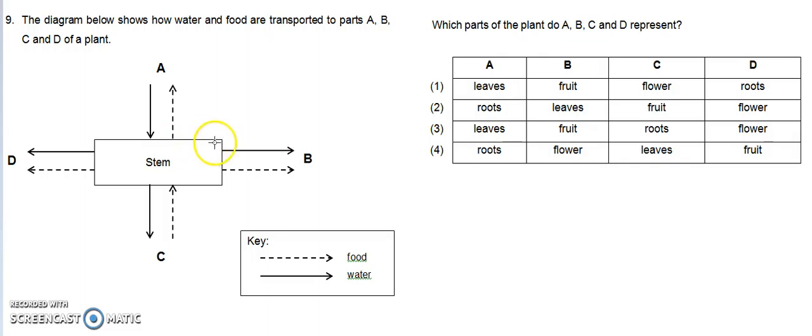In the middle here we have the stem. The broken arrow represents food, while the solid arrow represents water.